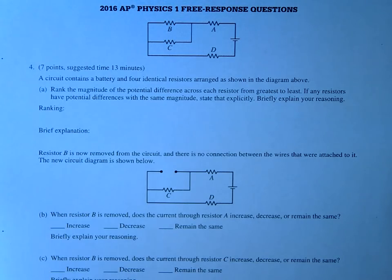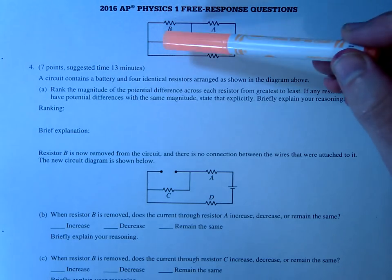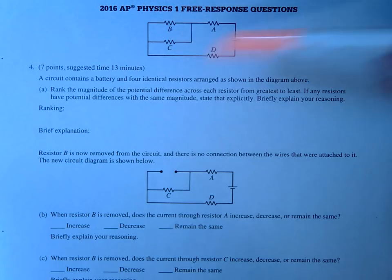This is the 2016 AP Physics 1 free response question number 4. So this one is a circuit problem, and in this one, the first question is how does the potential difference across each resistor, how are they ranked?